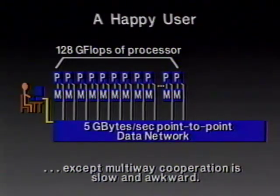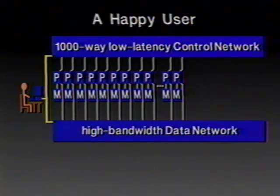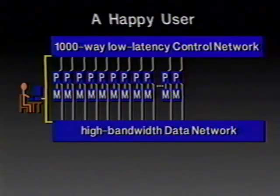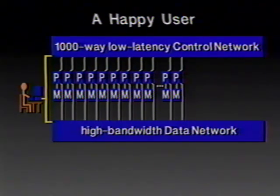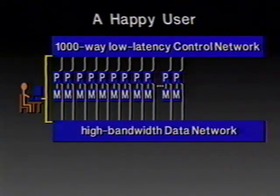So we're going to fix that by adding another kind of network with very different capabilities from the network designed to move big piles of data around point to point. We're going to add a control network designed to be multi-way — maybe a thousand-way — so that it can talk to all the processors at once, and designed to have low latency so you don't take a lot of time relaying data from processor to processor.